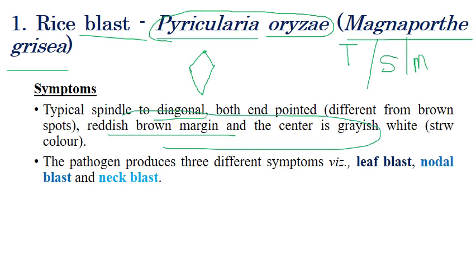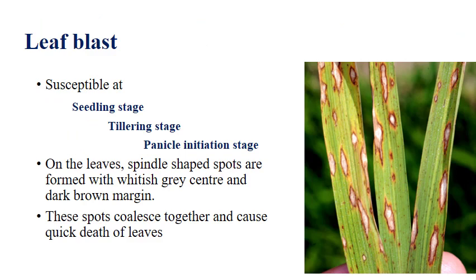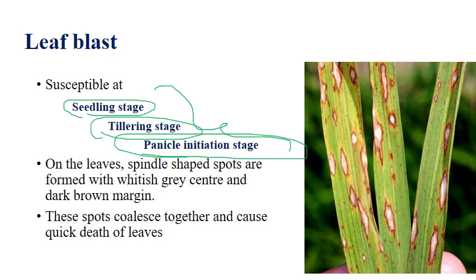Rice blast occurs in three types: Leaf Blast, Nodal Blast, and Neck Blast. Leaf blast affects plants at seedling stage, tillering stage, and panicle initiation — these are the most susceptible stages. The symptoms are diamond or spindle-shaped spots with a gray center and dark brown margins visible on the right-side diagrammatic representation provided for each disease.